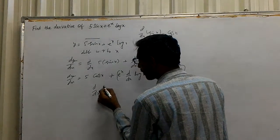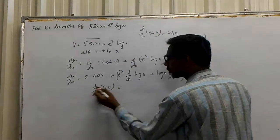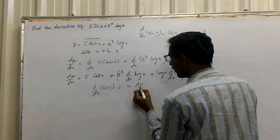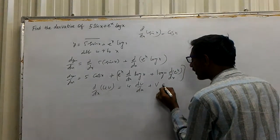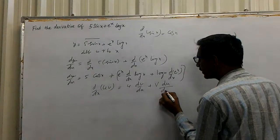d by dx of uv equals u times d by dx of v plus v times du by dx.